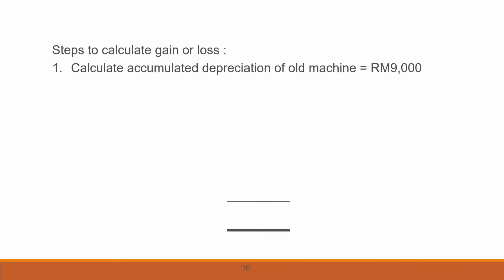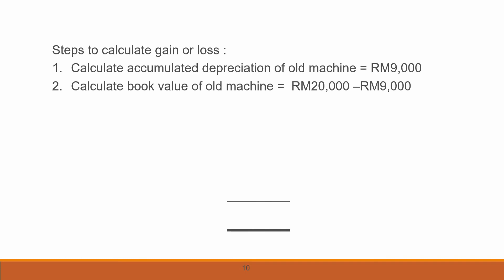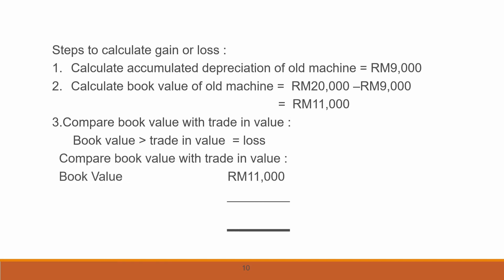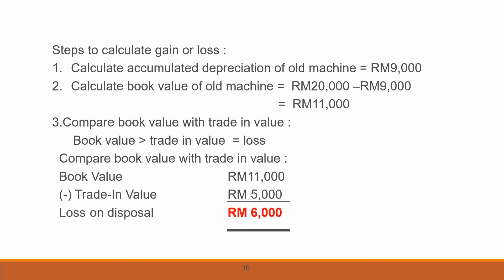Now we can use the formula to calculate gain or loss. Accumulated depreciation of the old machine from the schedule is RM 9,000, and the book value of the old machine is RM 11,000. Comparing book value RM 11,000 with the trade-in value RM 5,000, we get a loss on disposal of RM 6,000.